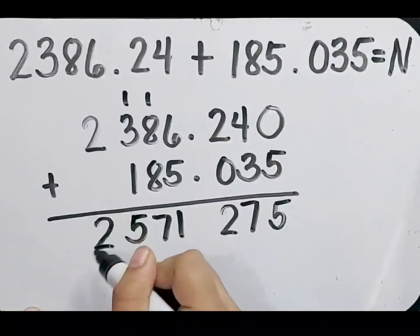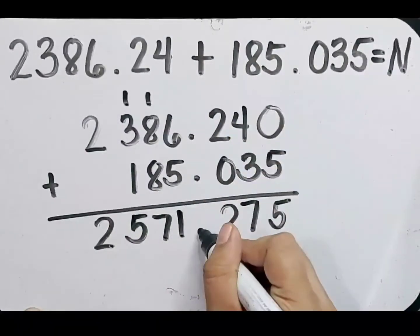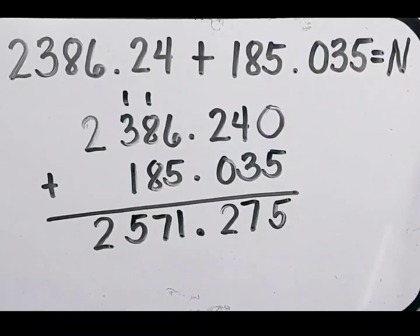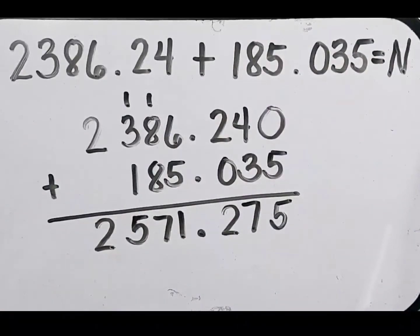Bring down 2. Now let's copy the decimal point. Our answer is 2,571.275.